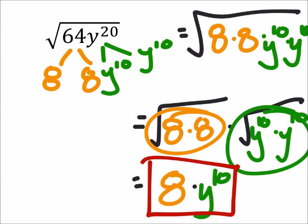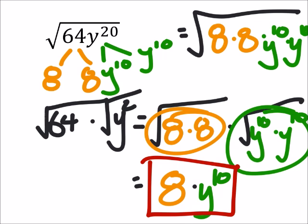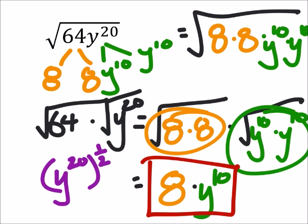If you're confused about that y to the power of 20, another way to look at this is we could break this as the square root of 64 times the square root of y to the power of 20. And y to the power of 20, the square root of that would be like y to the power of 20 to the one half, which is kind of what we did last week.